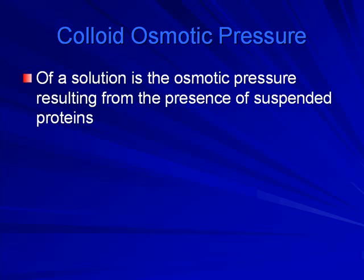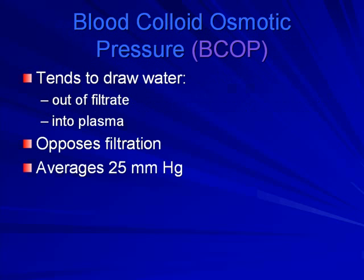In kidney disease, a tremendous loss of protein in urine indicates loss of kidney tissue, because proteins are typically reabsorbed and should not be excreted. Proteins help maintain our volume level, so when you see a tremendous loss of protein, you know a disease process is occurring in the kidneys. Blood colloid osmotic pressure draws water out of the filtrate into the plasma, opposing filtration, averaging about 25 mmHg.